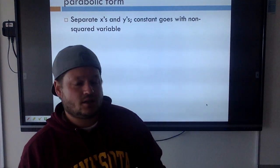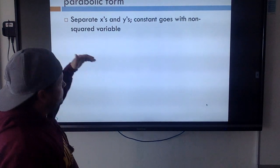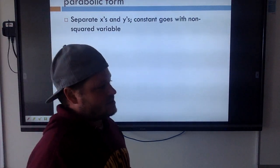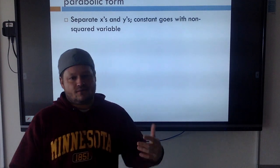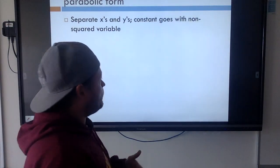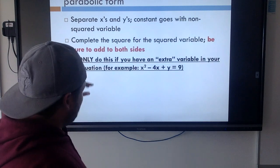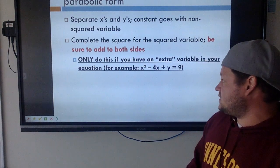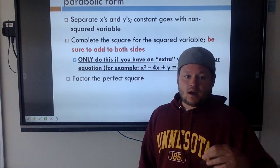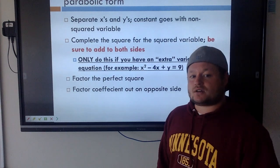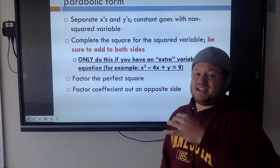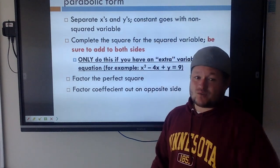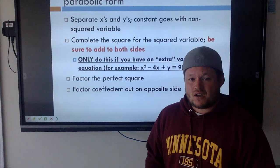Also, today I'm gonna give you questions where instead of me giving you the formula to graph, I'm gonna give you a couple parts of a parabola and you need to figure out what the equation of that parabola is. These are the steps to put an equation into standard parabolic form: separate your x's and y's. The constant - a number without a variable - goes on the opposite side of your square variable. You're going to complete the square, factor that perfect square, and factor out a coefficient if you can on the opposite side. I would write these steps down.